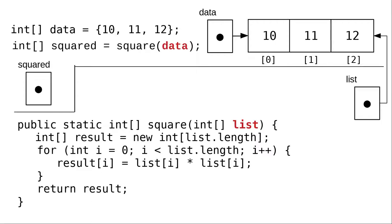When we make the call, just as before, list becomes a copy of the reference to data's area of memory.